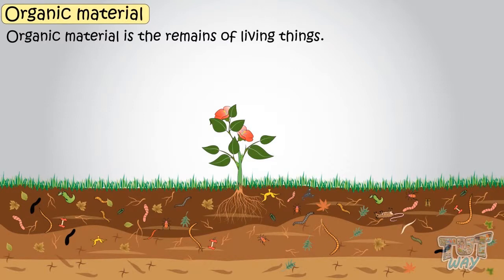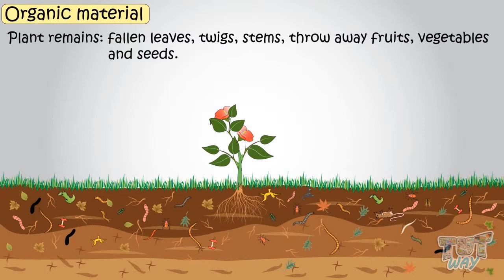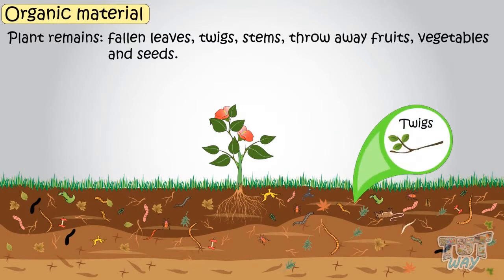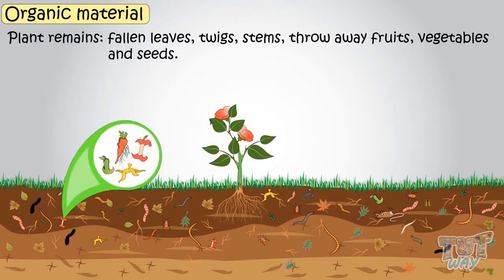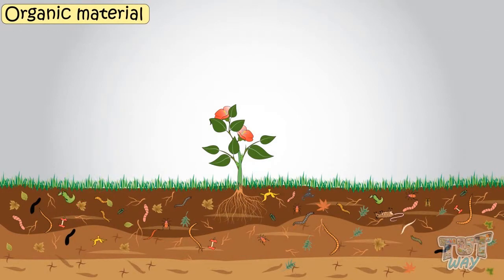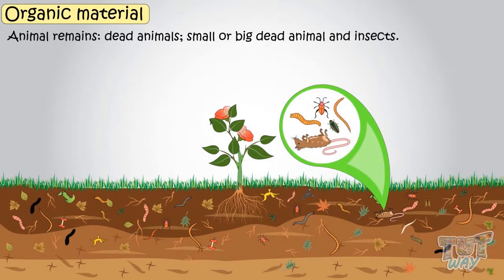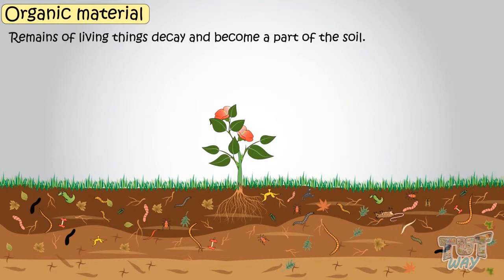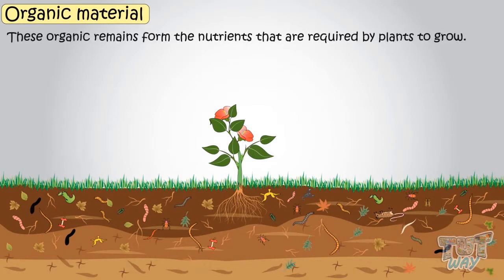The remains of living things like plant remains, fallen leaves, twigs, stems, or fallen fruits, vegetables, and seeds, as well as animal remains — dead animals small or big, dead insects or other animals — all decay and become part of the soil. These organic remains form the nutrients that are required by plants to grow.